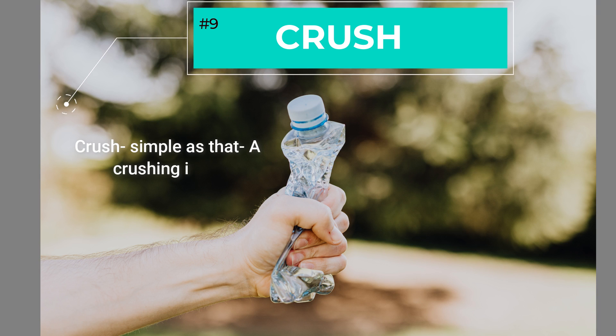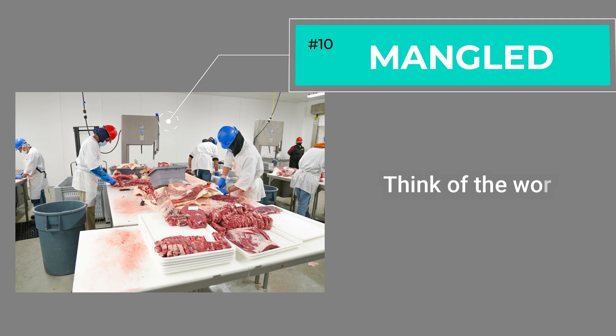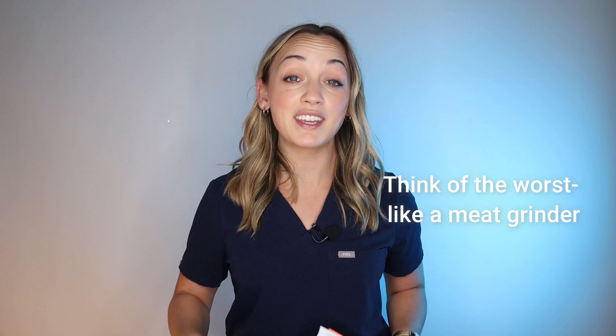Nine and ten are pretty easy to remember because we use these terms in everyday language. The ninth injury is a crushing injury — tissue is compressed between two hard surfaces and damaged. Think of a crushing machine pushing down. Our last musculoskeletal injury is mangled. The description of mangled is an injury to three or more systems in a limb: soft tissue, bone, nerve, or vascular. Think of somebody's hand going through a meat grinder — it will become mangled.